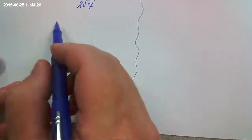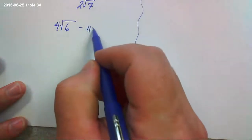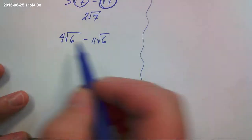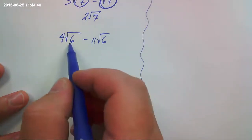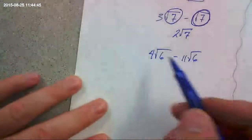Or, for example, if we were going to do 4 times the square root of 6 minus 11 times the square root of 6. Again, these are the same. They're like terms. Another way you could think about it is like this. We'll come back to this one in just a minute.